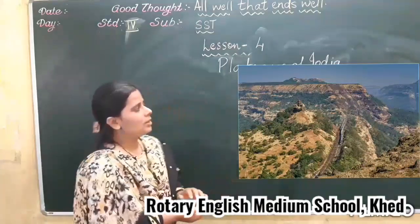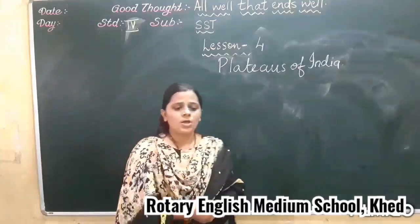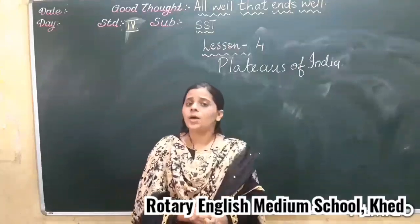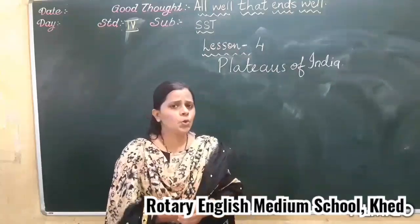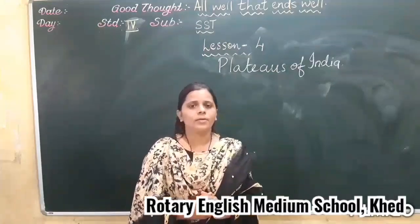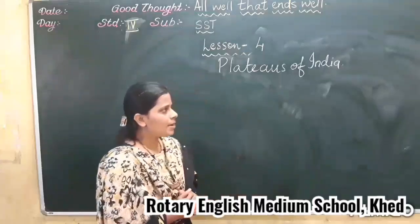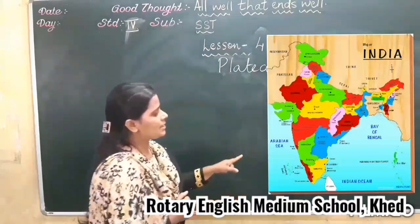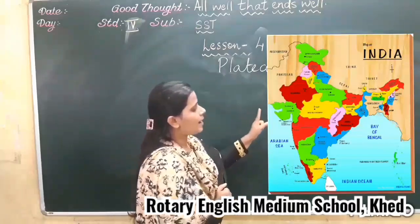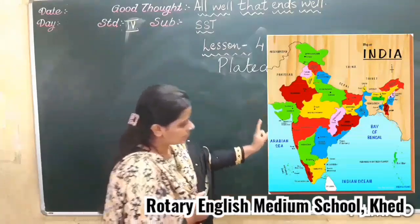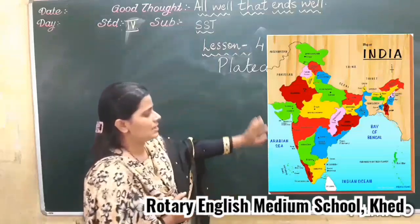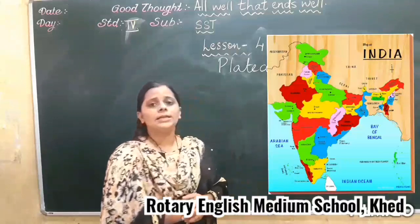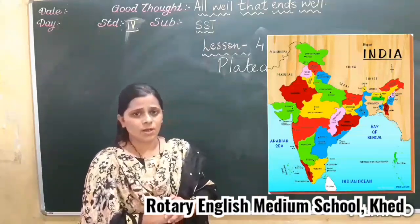Now let's start with the plateau of India. First, we will discuss the peninsular plateau. Do you know what is peninsular? It means land masses. Look at this map — the land masses which are surrounded by water on three sides is known as peninsular.